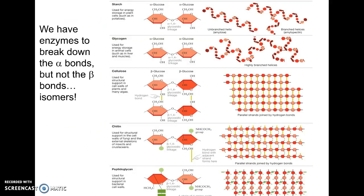This is a diagram showing — you would not have to recognize which of these is cellulose — but you should recognize what a polysaccharide looks like. Notice how they're all chains, but they're just arranged differently.